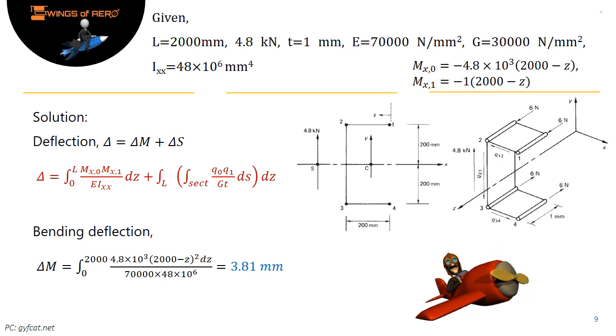In the first term, as given, moment Mₓ₀ = -4.8×10³(2000-z) and moment about x axis Mₓ₁ = -1(2000-z). Young's modulus and moment of inertia are also known. Then solve the first term with known values for the limit 2000 mm. Then we get the bending deflection 3.81 mm.